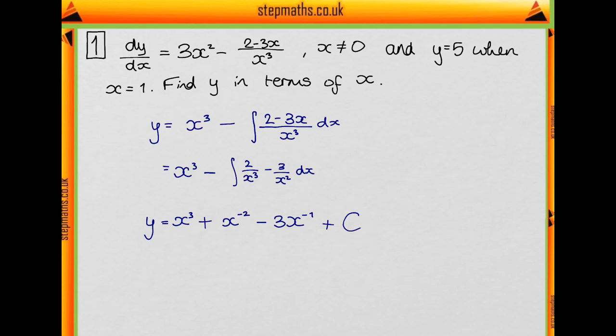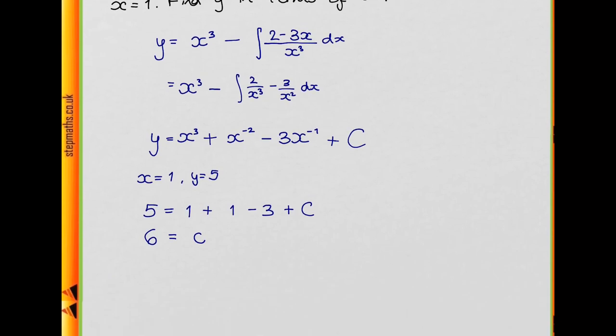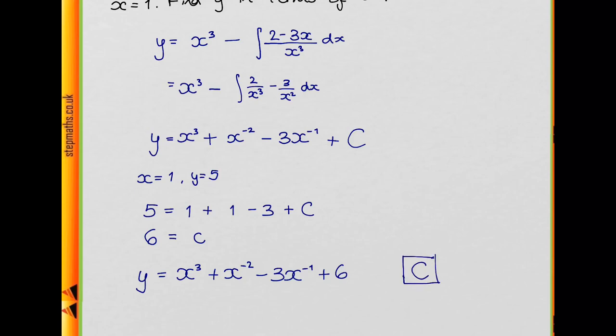So how are we going to find C? Well we'll use the special case we know about so x equals 1, y equals 5. We substitute that in to here and we can rearrange to see that 6 is C. So this is our final equation which looks like this and so our answer is C.